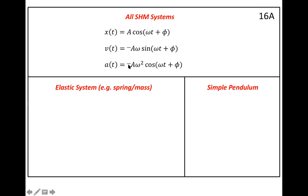When we plot these, position ranges from plus A to minus A, velocity ranges from minus A-omega to plus A-omega, and acceleration ranges from minus A-omega-squared to plus A-omega-squared, so the maximum acceleration is A times omega squared. The phase omega-t plus phi is in radians — omega in radians per second times time gives radians. When calculating that cosine, your calculator must be in radians mode. That is important.